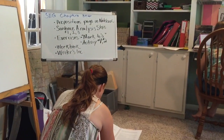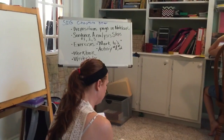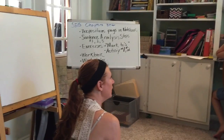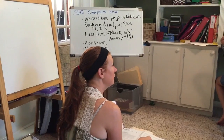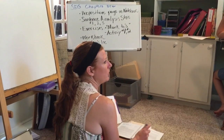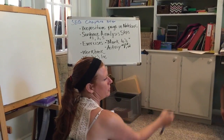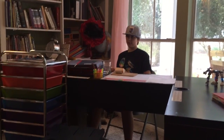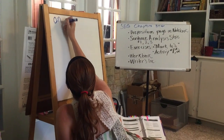Who wants to tell me what a preposition is? It's a word that shows the relationship between a noun or a pronoun and another word in the sentence. Jack, what does that mean? It shows the relationship between a noun and another word. Tell me the relationship between you and that chair. I'm sitting on it. On — 'on' shows a relationship between Jack and that chair.